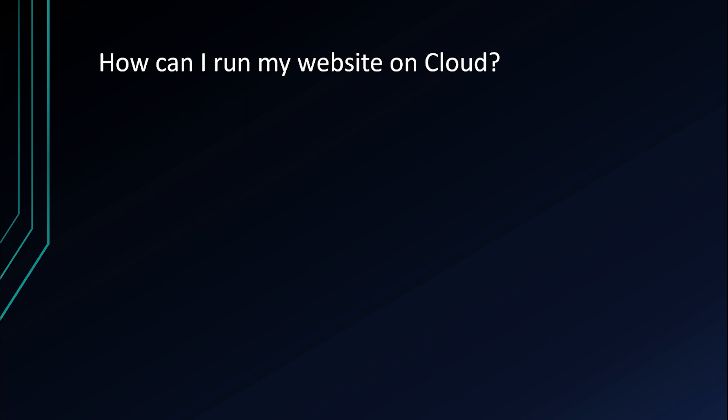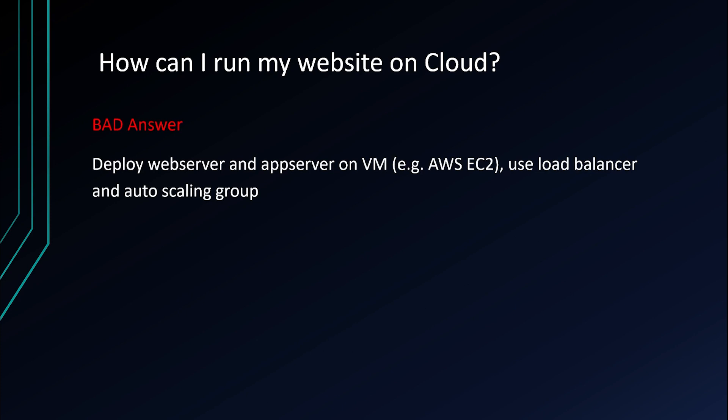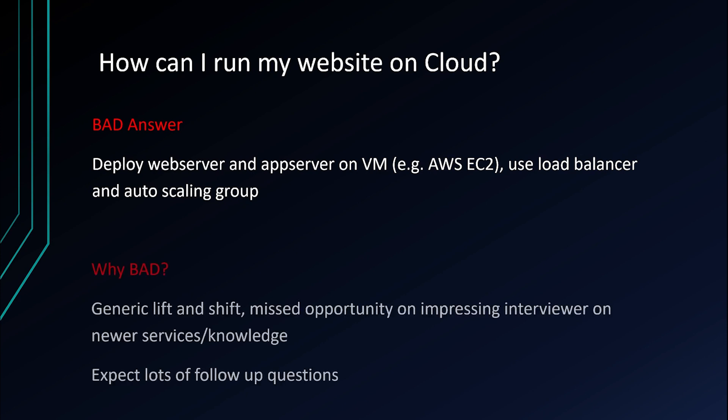Second question: how can I run my website on the cloud? A subpar answer is: deploy your web server and application server on a virtual machine — for example, AWS EC2 — and then use a load balancer and autoscaling group. Why is it not good? Because it is a pretty generic lift-and-shift answer, and there is a missed opportunity to impress the interviewer with knowledge of newer services. If you just give this answer, expect lots of follow-up questions on scaling, cost, security, and management.